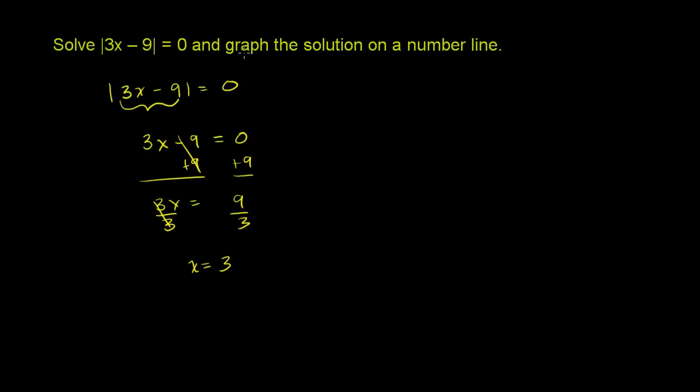And you're done. Now we just do the second part: graph the solution on a number line. So let's graph. We have a number line here. Let me draw one. It's a number line. I'll put some negative values. Maybe we'll start at negative 2, negative 1,